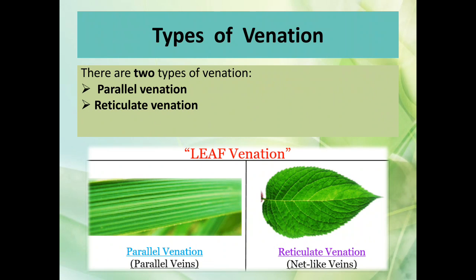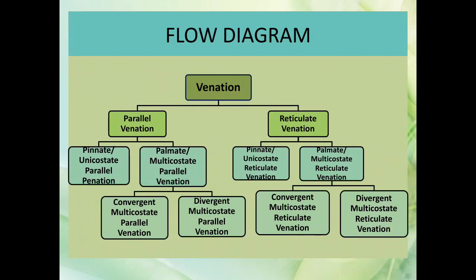Types of venation: there are two types of venation — parallel venation and reticulate venation. You can observe these in the diagram. According to the flow diagram, venation is of two types: parallel and reticulate. Parallel venation has unicostate parallel venation and palmate or multicostate parallel venation. Reticulate venation also has two types.